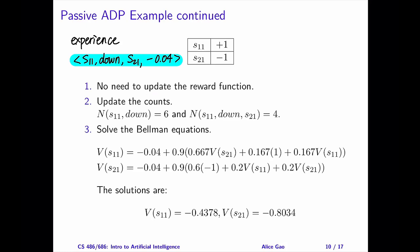The new transition probability is: the probability of S21 given S11 and down is 4 divided by 6, which is around 0.667.